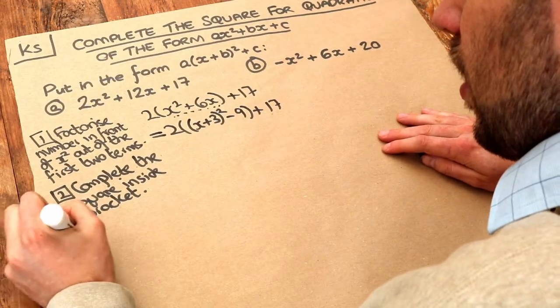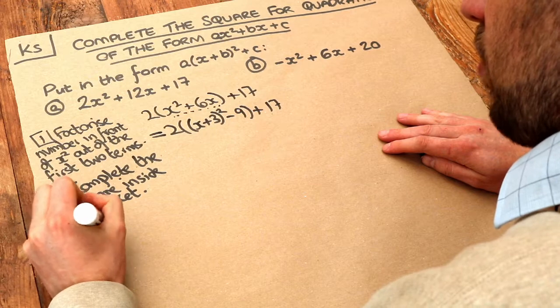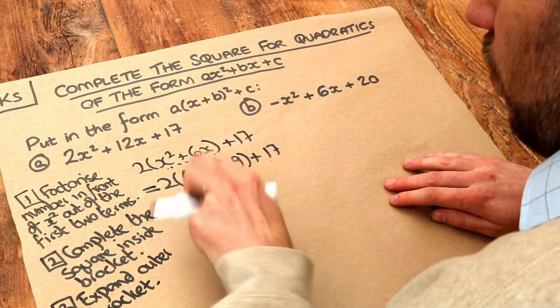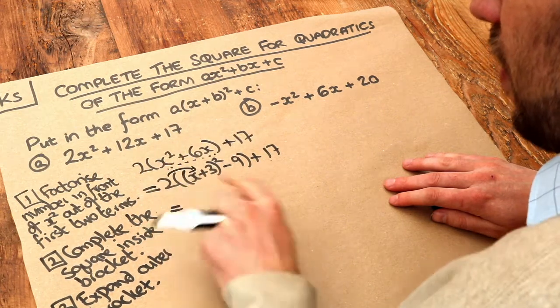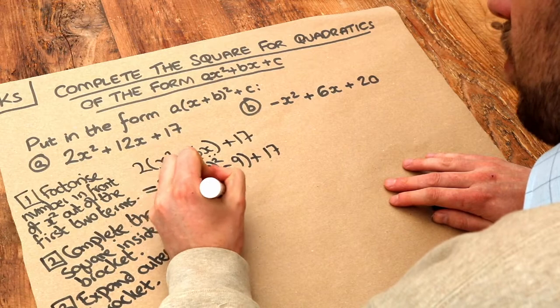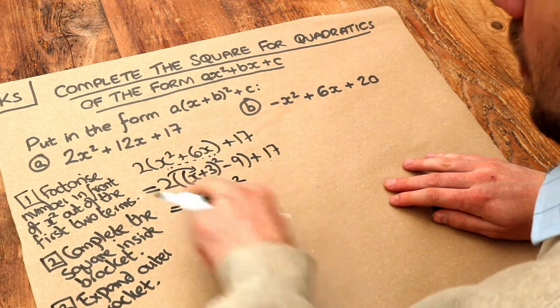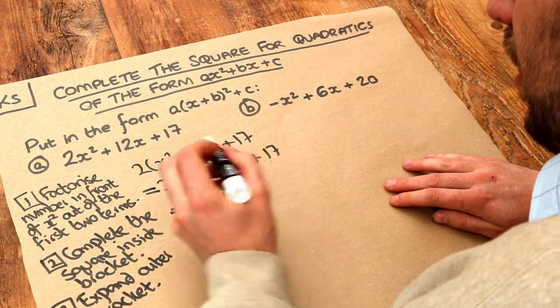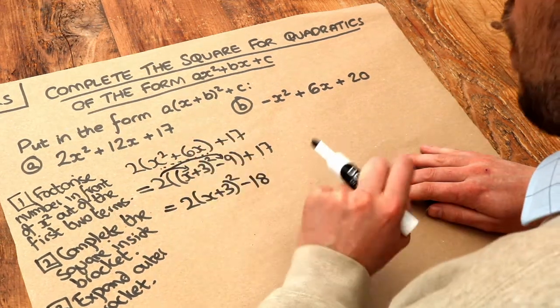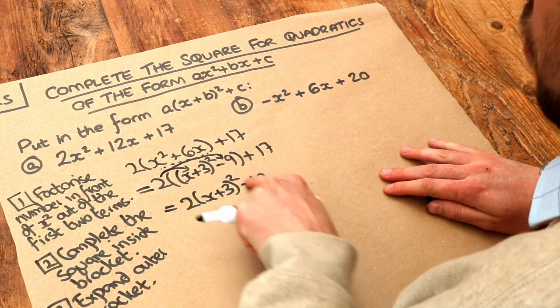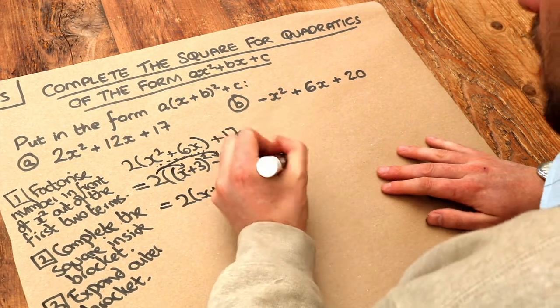And then finally we expand out the outer bracket. So if we expand the outer bracket, well we've got the 2 times this thing here, so 2 times x plus 3 squared is just 2 times x plus 3 squared. Don't expand out this bracket otherwise we get back to where we started. And we've also got the 2 times the minus 9 which is minus 18. And a very common error that students make is that they forget to do the 2 times minus 9 and just write minus 9 there. We've still got that plus 17 there.